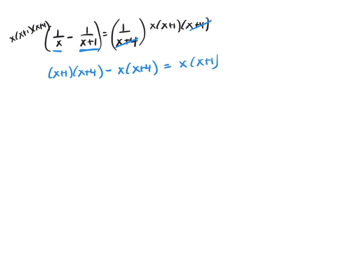Now, if I multiply this out, this gives me x squared plus 5x plus 4. And I did that by multiplying x times x, x times 4, 1 times x, and 1 times 4, and combining like terms.